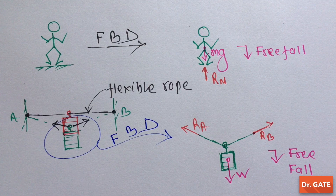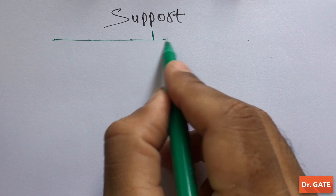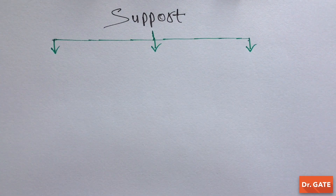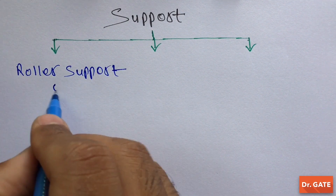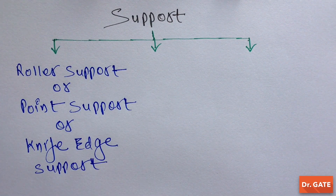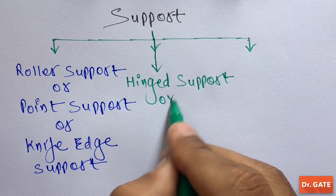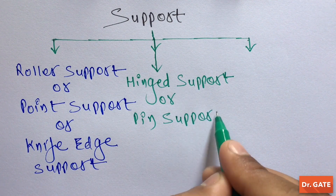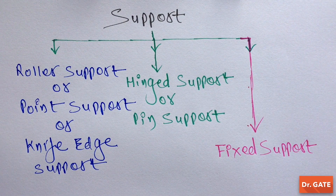Now that you know what a free body diagram is, let's come to the supports. In mechanics, there are basically three types of supports. The first one is roller support, also known as point support or knife edge support. The second one is hinge support, also known as pin support. And the third one is fixed support. Now we are going to see these supports in detail.